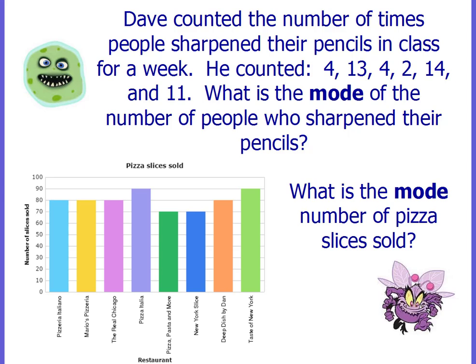Dave counted the number of times people sharpen their pencils in class for a week. He counted 4, 13, 4, 2, 14, and 11. What is the mode of the number of people who sharpen their pencils? Mode means the one that appears the most. Looking at your data, you can see that the mode is 4. Four appears twice, while all of the other numbers appear only once.